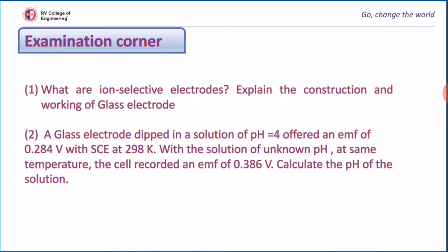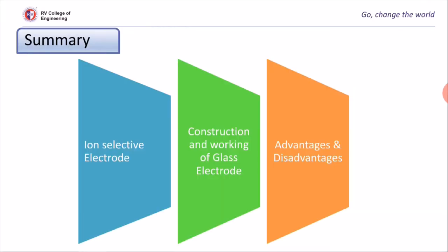Exam corner. The first question is related to definition of ion selective electrode. You have to mention the meaning of ion selective electrode which includes a membrane and two different concentrations. You have to mention that because of the membrane, a potential is developed on either side. With the help of a neat labeled diagram, you have to explain the construction and working of glass electrode.